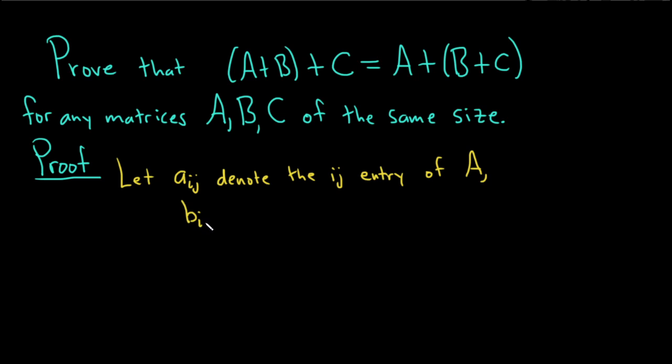B_ij, or B sub ij, denote the ij entry of B.